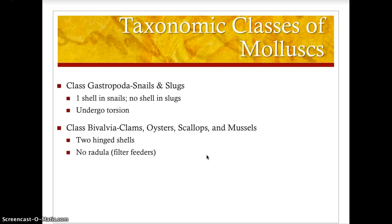The taxonomic classes of Mollusca — domain Eukarya, kingdom Animalia, phylum Mollusca: Class Gastropoda includes slugs and snails. Snails have one shell; slugs have no shell. They undergo torsion if they have a shell. Class Bivalvia includes two-hinged shells: clams, oysters, scallops, and mussels. They have no radula and are filter feeders, pulling food in through an incurrent siphon and expelling waste through an excurrent siphon.